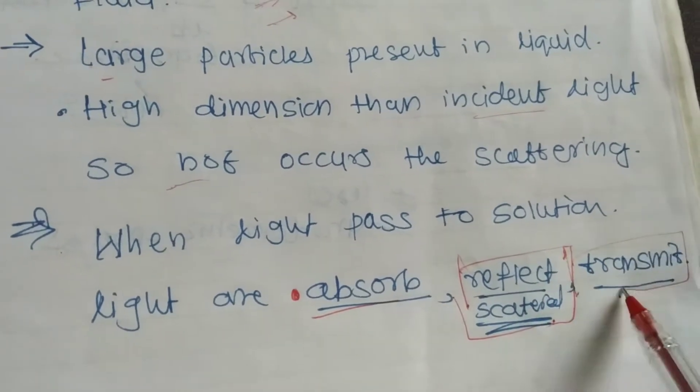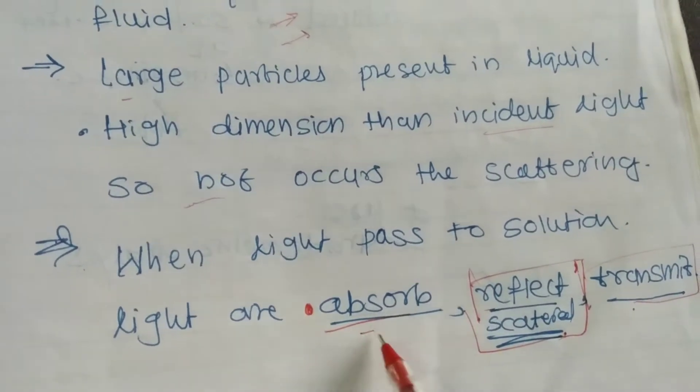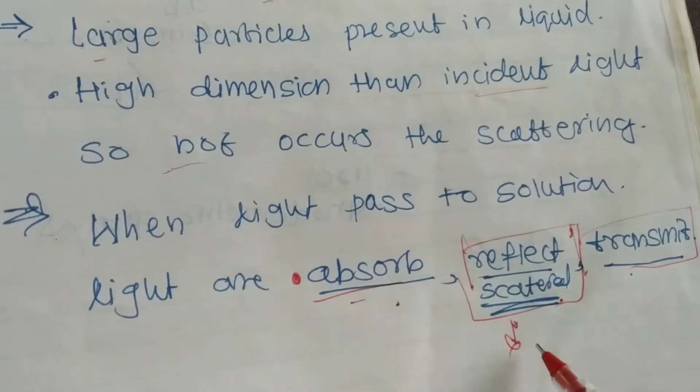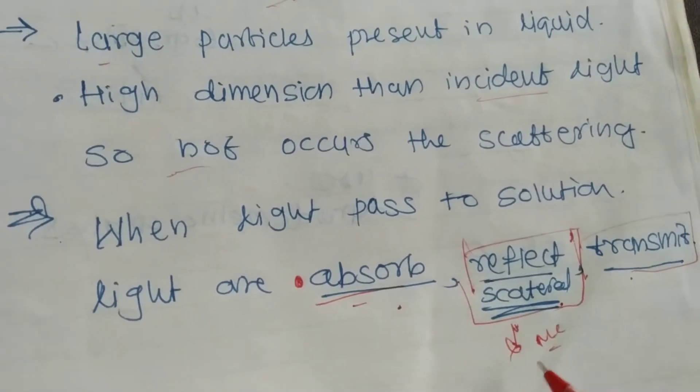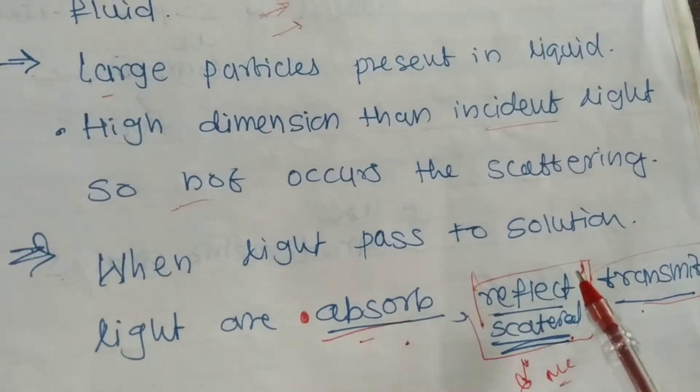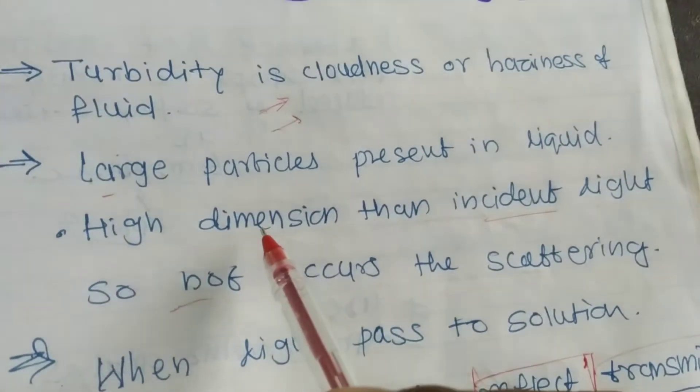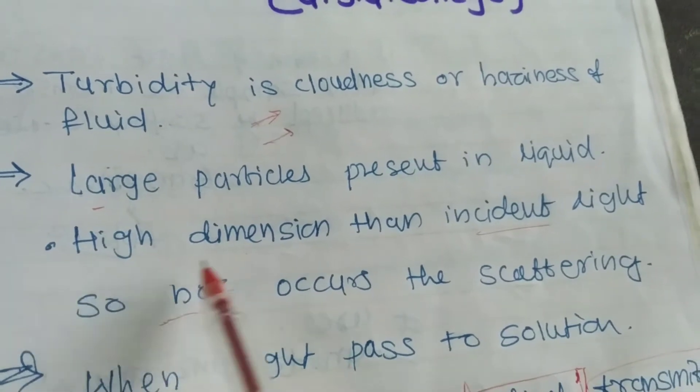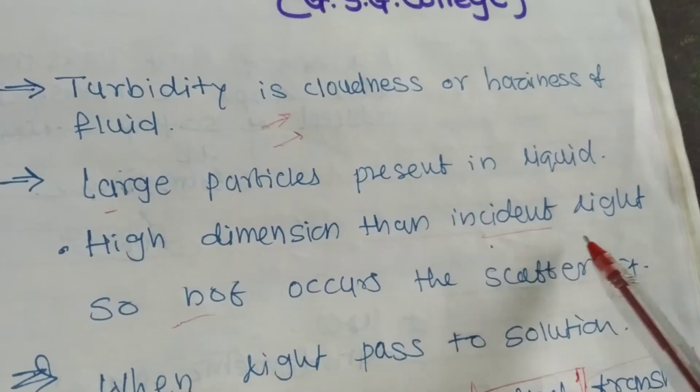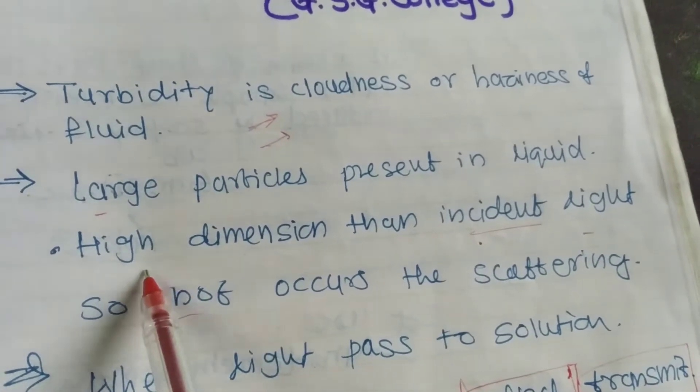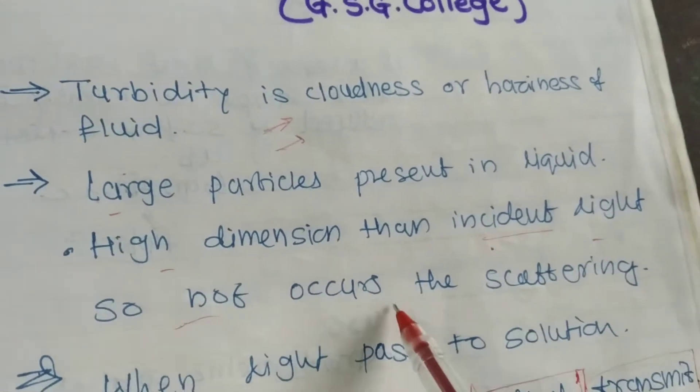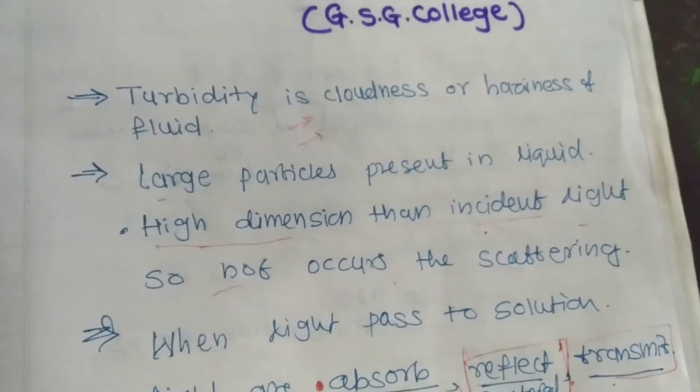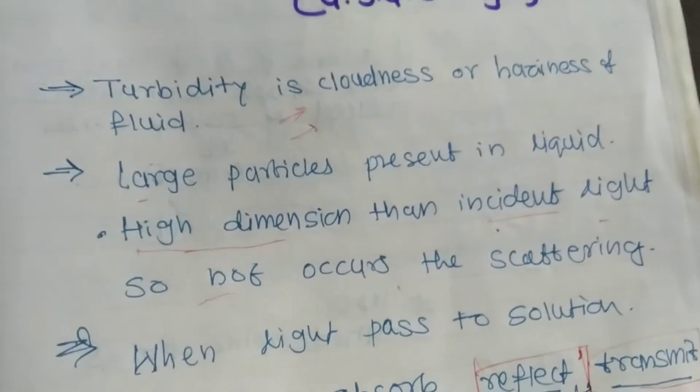and third, transmittance takes place. When light is reflected or scattered, we use nephelometry. But in turbidimetry, the particle size in the liquid is of higher dimension than the incident light wavelength, so light does not scatter but is absorbed by these high dimension particles. Turbidimetry is like colorimetry.